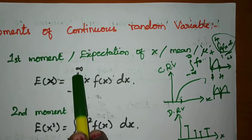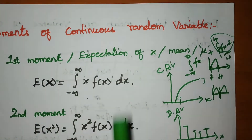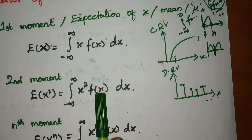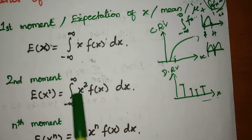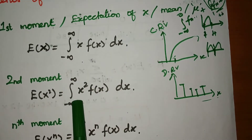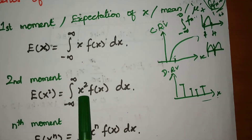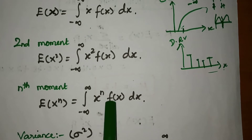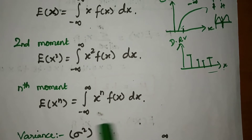Therefore, the integral runs from minus infinity to plus infinity. The second moment uses x squared. Integral of x to the power n multiplied by f(x) — that is the nth moment integral of x to the power n.